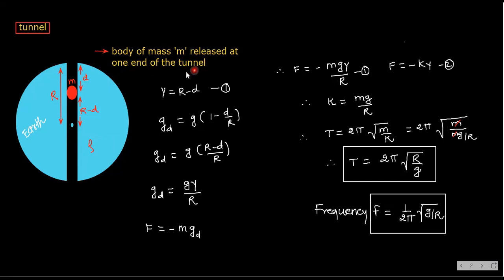A body of mass m is released at one end of the tunnel. The displacement from the center is (R − d). Gravity at depth d: gd = g(1 − d/R) = g(R − d)/R. Since R minus d equals y, substituting gives gd = g·y/R. Force at this point is minus m·gd, so F = −mg·y/R. Substituting gd's value. Comparing with F = −ky, we get k = mg/R.